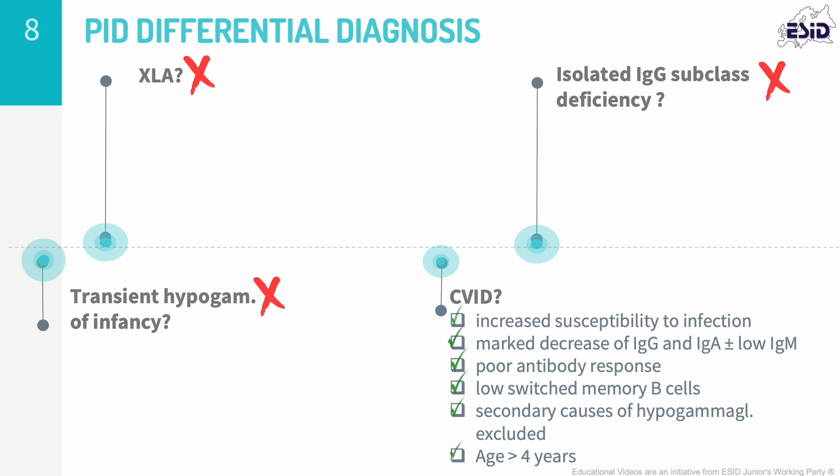The age of onset is variable and diagnosis is often delayed due to poor understanding of the condition. Although patients with CVID share many clinical and immunological features, the severity and degree of the disease varies considerably between affected individuals. The most consistent clinical feature is increased susceptibility to respiratory tract infections, but at least one third of patients also develop autoimmunity, lymphoproliferation, and malignancies.